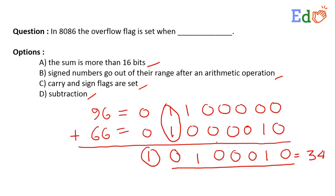The result comes out as 34, which is a wrong answer — 96 plus 66 can never be 34. So in the last bit when we add those bits, we have an overflow. This is called a sign bit overflow. In 8086 the overflow flag indicates this situation. So the answer is B: sign numbers go out of their range after an arithmetic operation.